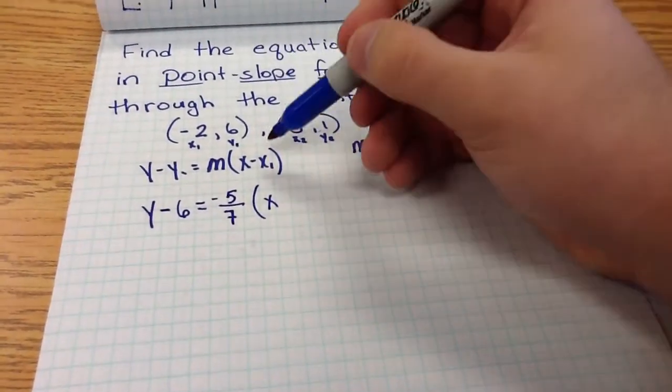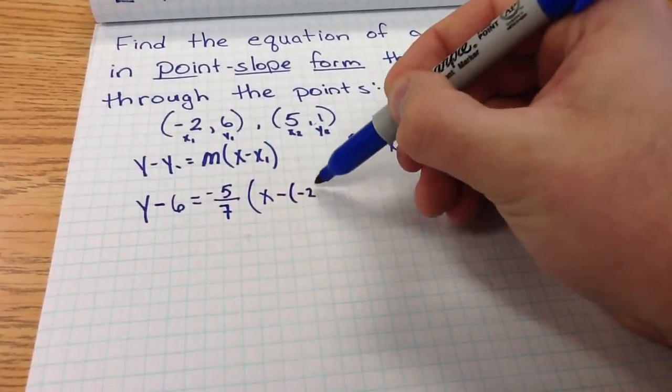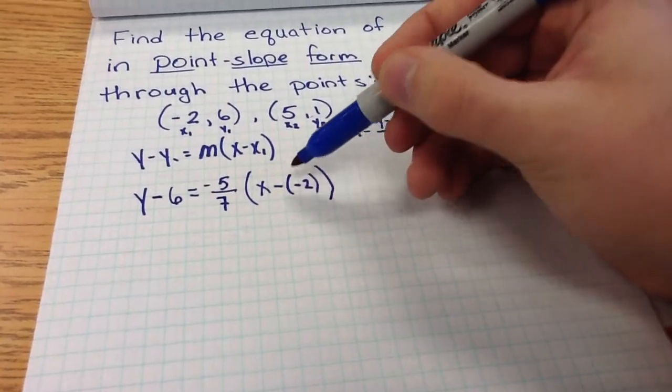Now, the key here is remembering that it's a minus, and then again, a negative 2. So again, I'm going to put that negative 2 in parentheses, just so I don't write two negative signs next to each other.